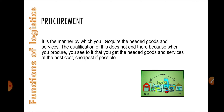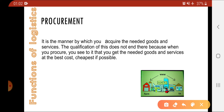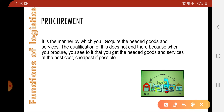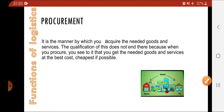In procurement, we have to procure the goods. Whatever you are procuring, you have to ensure that you get the needed goods and services — the goods required for the business — at the best and cheapest cost possible. These are the things you have to take care of when procuring goods.